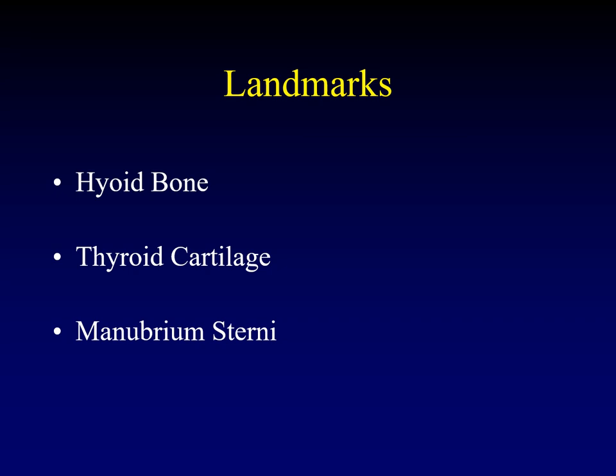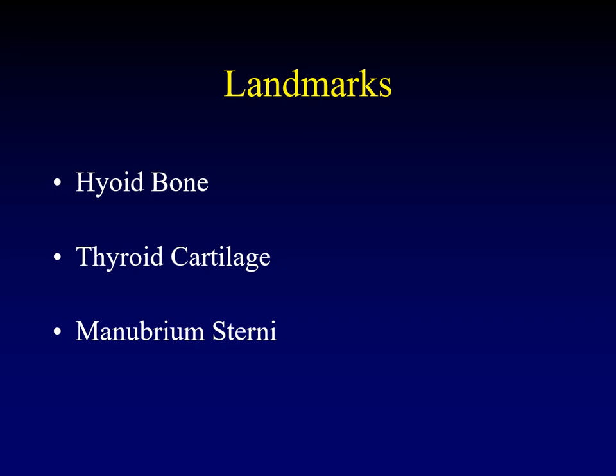The thyroid cartilage is the major cartilage surrounding the larynx. On cross-section, you've got to be able to distinguish between the hyoid bone and the thyroid cartilage at a glance, to know where you are in the neck — whether you're up high near the hyoid bone or down low near the thyroid cartilage. The bottom of the neck is defined by the manubrium sterni, the very top edge of the sternum, which defines the thoracic inlet leading into the chest.